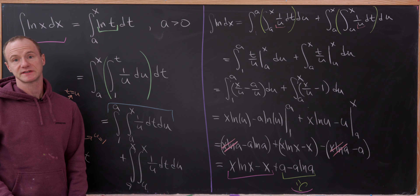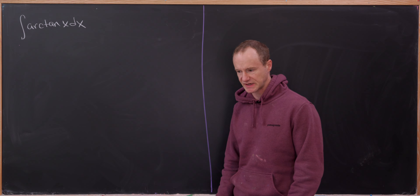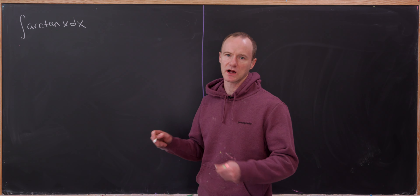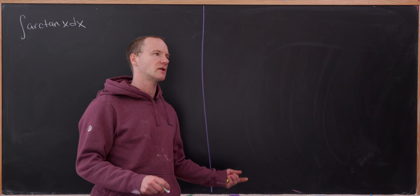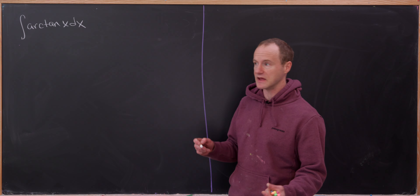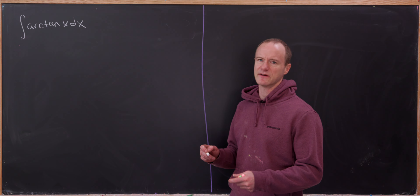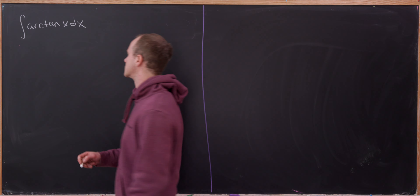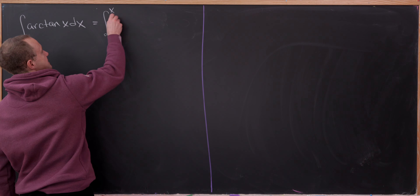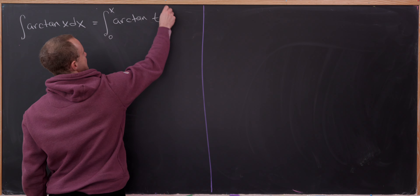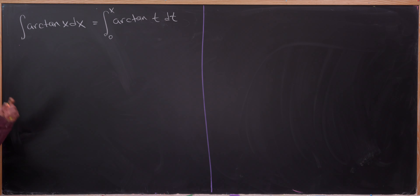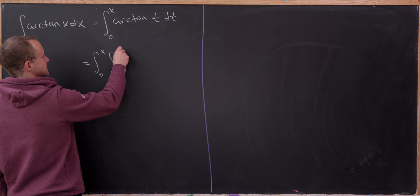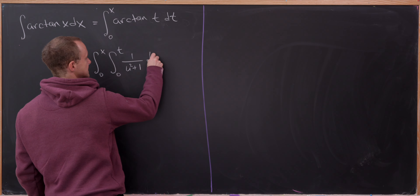Now let's see if this works with the inverse tangent. We'll use the same method to find the antiderivative of the inverse tangent, but this time we'll simplify our lives a little and just find an antiderivative up to a constant. We start by writing this as the integral from 0 to x of arctan(t) dt, and then replace inverse tangent with its integral representation: the integral from 0 to x of the integral from 0 to t of 1 over u squared plus 1 du dt.